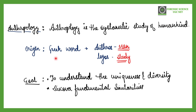The word 'anthropology' comes from two words: 'anthropos,' which means men or humans, and 'logos,' which means study. So collectively, anthropology is the study of humans or the study of men.